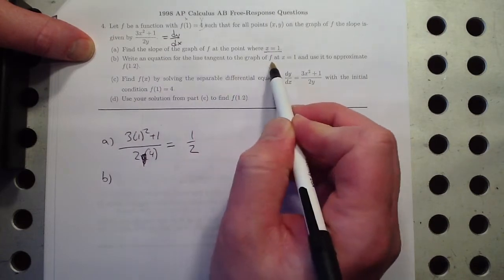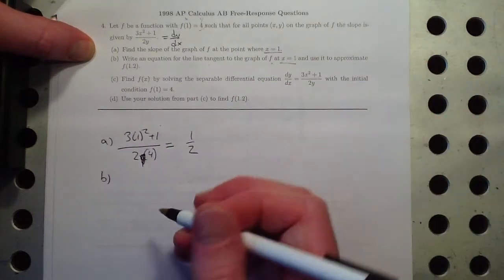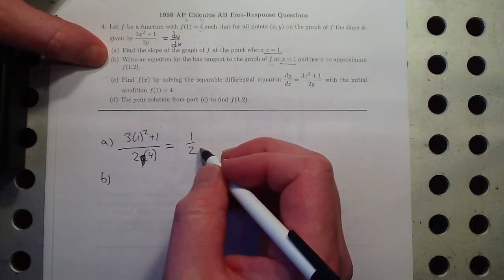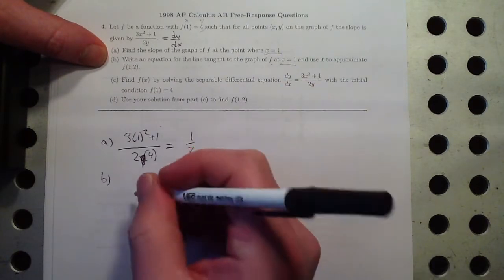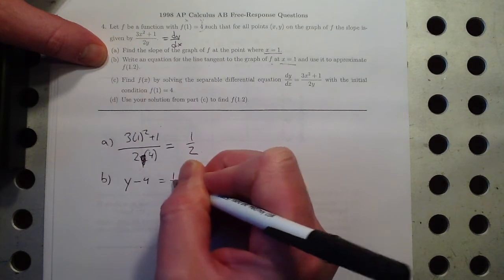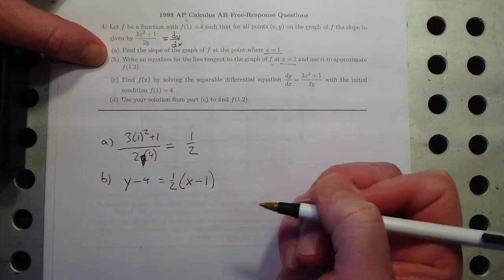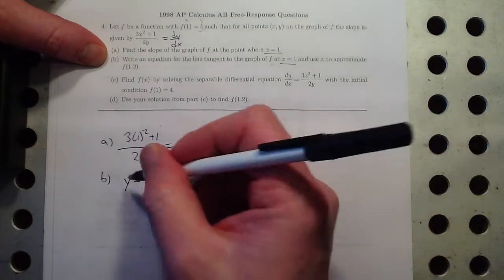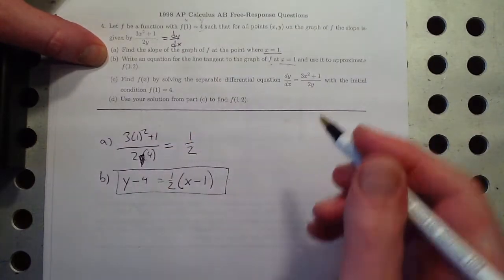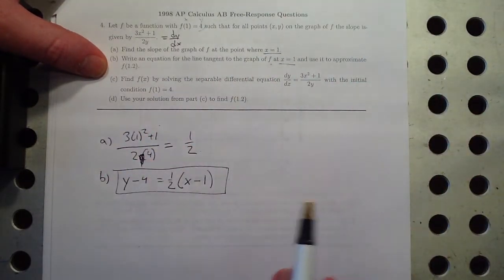Write an equation for the line tangent to the graph of f at x equals 1, and then use it to approximate f of 1.2. OK, so let's see. I already know my slope, right? I found that here. So my tangent line would be y minus 4 equals m times x minus 1. And you could leave it like that. That is the equation for the tangent line. Or you could put it, since we're going to use it in a second, you can add the 4 over. You can put it in slope-intercept form. They don't care what form it's in.